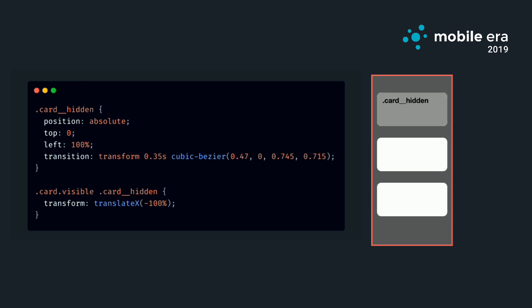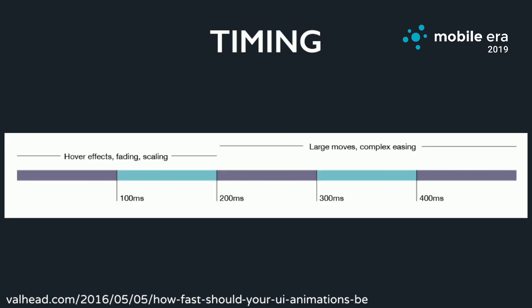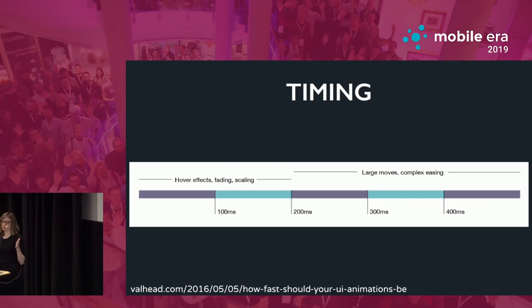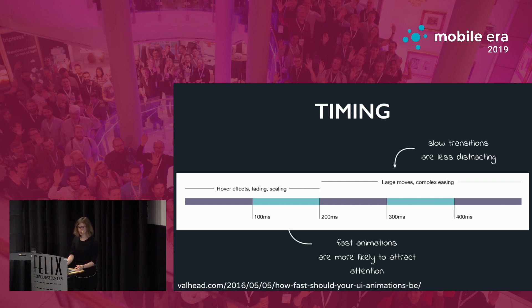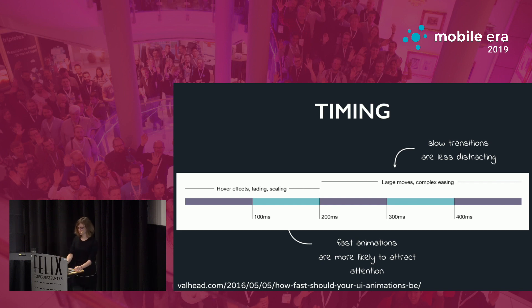Now I want to talk about the timing of animations and the easing — the cubic bezier. There's a really good article by Val Head called 'How Fast Should Your UI Animation Be?' In general they should be really fast: between 0 and 200 milliseconds for small animations like hovers, fading, and little scalings. If you have a lot of distance, movement, or complex easings like a bounce, you should take longer timings between 200 and 400 or 500 milliseconds. Really fast UI timings are more likely to attract attention, while long slow transitions often go unnoticed.